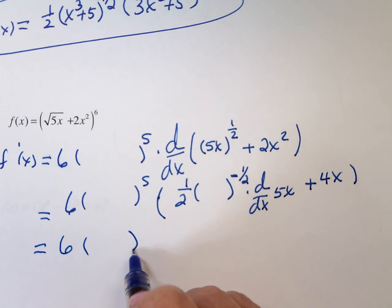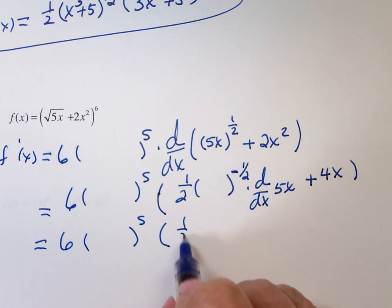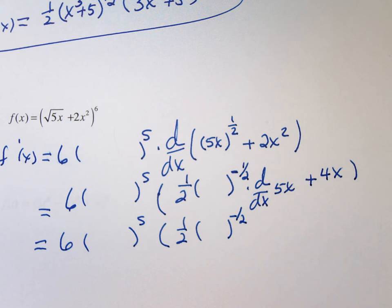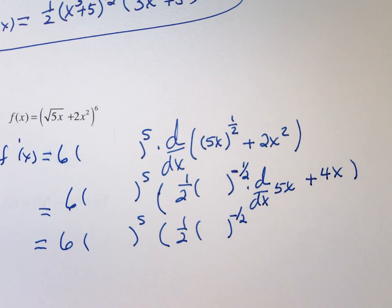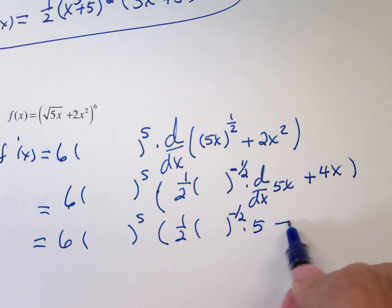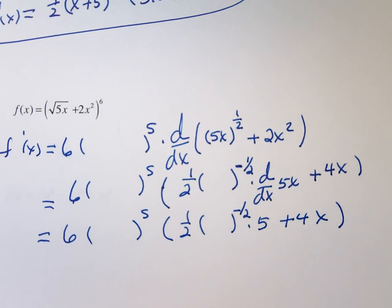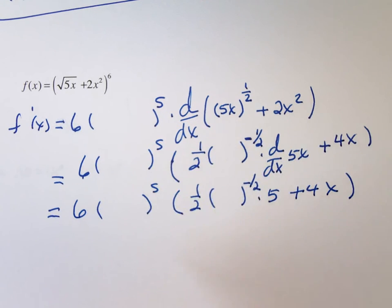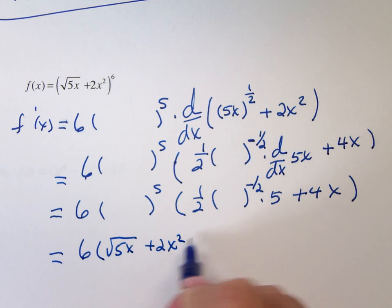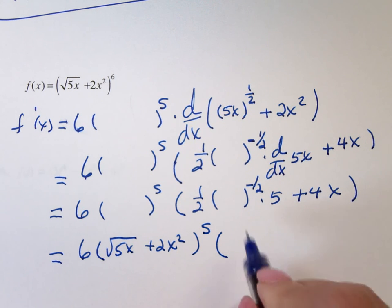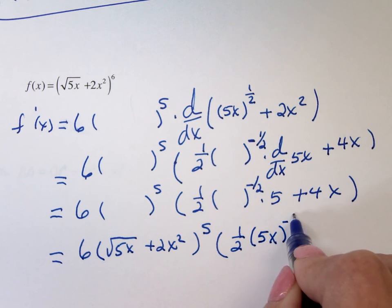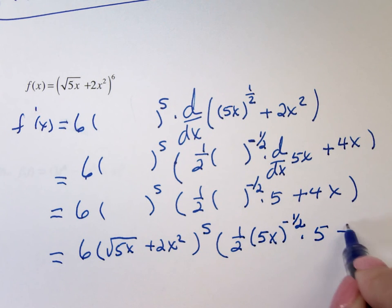So there's 6 times the blob to the fifth times one-half times his own blob. Now, this is why I use the notation, by the way, because what the notation does is force me to do the problem step-by-step. What's the derivative of 5X? 5. I don't see any DX's anywhere, do you? So that says I have it. 6 times the original blob to the fifth times one-half times the baby blob. 5 times five plus 4X.